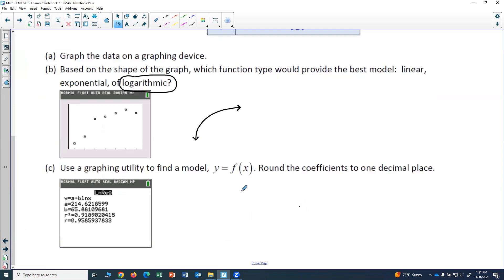All right, so my model is f of x equals a plus b natural log of x, which is 214.6 plus 65.9 natural log of x. The 0.88 would round to 0.9.